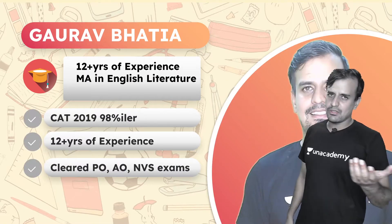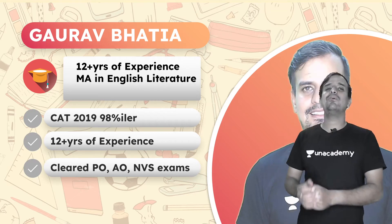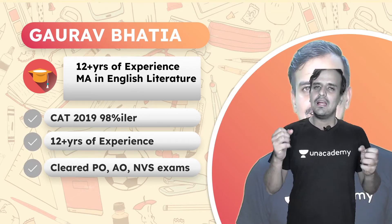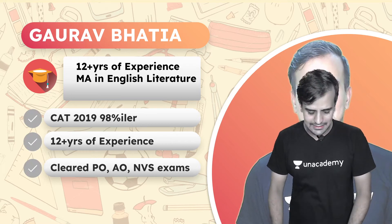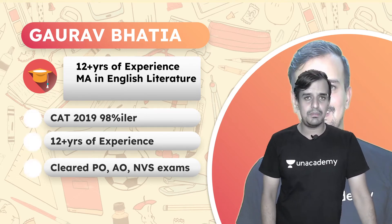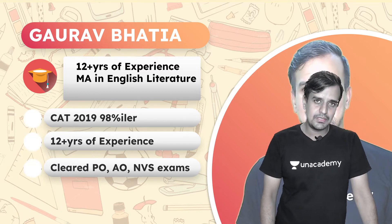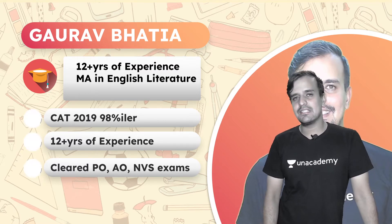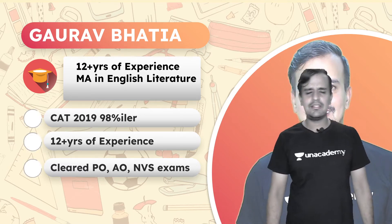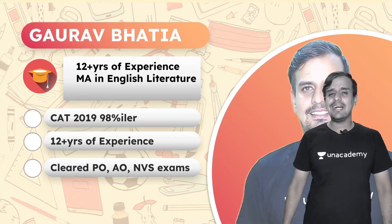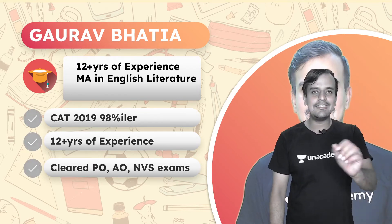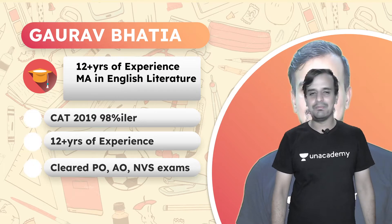My name is Gaurav Bhatia, and I have more than 12 years of experience. Besides that, I have also cleared numerous papers — for example, Banking exams, Insurance AO, and NBS exams. Lots of papers I have cleared, and in 2019, I cracked CAT with a 98th percentile. That is the main reason I am here — I am just mentoring new people.